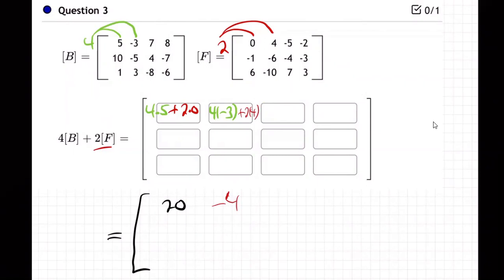All right, next one is going to be four times seven plus two times minus five. And so that's 28 minus 10, which is 18.